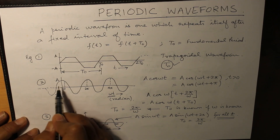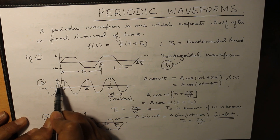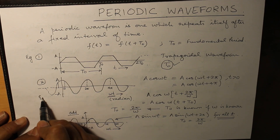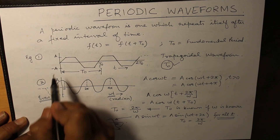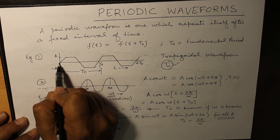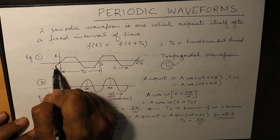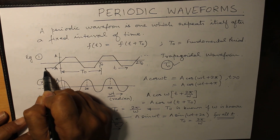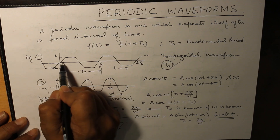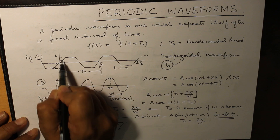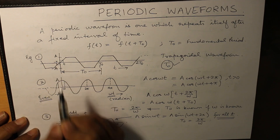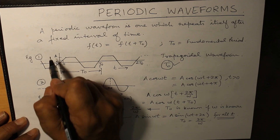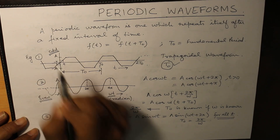The value at any value of t is the same as the value at minus t, so it is an even function. For the odd function, if extended, this is an odd signal because at t, whatever value you have, the same value with a negative sign you have for minus t. So this is also an odd signal.